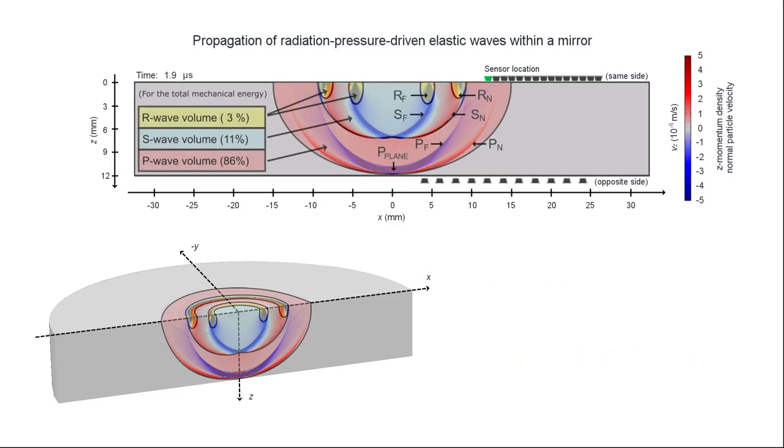The total mechanical energy of the elastic wave, 1.96 femtojoules, can be subdivided into different wave volumes.